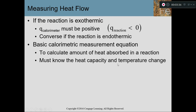Suppose you have a reaction that is exothermic — meaning the reaction is going to release heat. The calorimeter is going to gain that heat. So if the reaction loses heat, the calorimeter gains that heat, meaning the Q of the reaction is going to be negative but the calorimeter Q is going to be positive. The quantity of heat is going to be the same — it's just a matter of direction. We need to know how much heat is absorbed by the reaction and what's going on with the calorimeter itself.